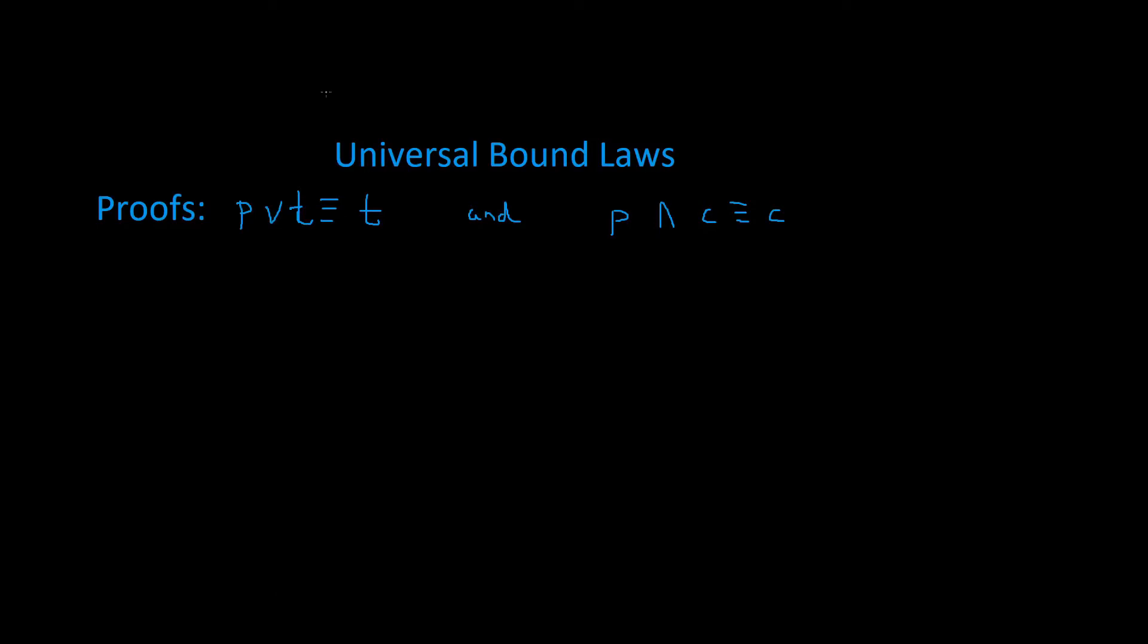Prove the Universal Bound Law. We're using the same statement variables. This one's going to be P. This is obviously going to be a short proof, because we said this is a 2 to the first power proof. And that's because there's only one statement variable slash component, which is true or false.